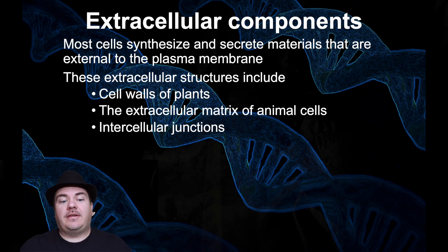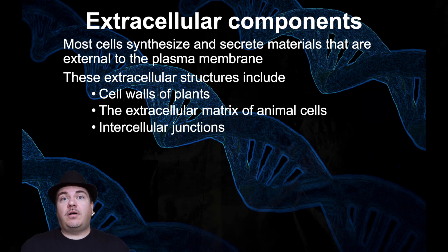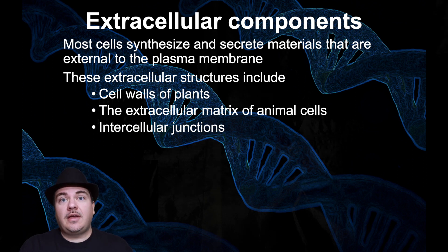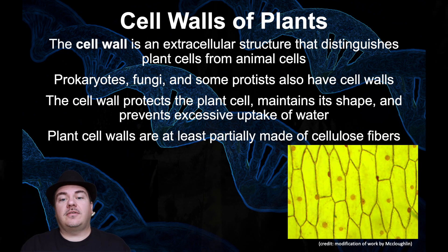Some examples of extracellular components are the cell walls you find with plant cells. Animal cells don't have a cell wall, but instead we have something called an extracellular matrix. And then there are also things called intracellular junctions, which join cells to each other. We're going to discuss those topics, starting with plant cell walls.